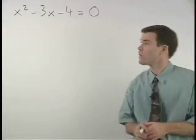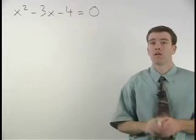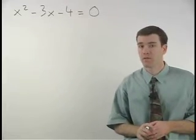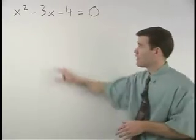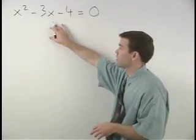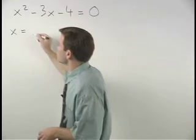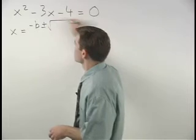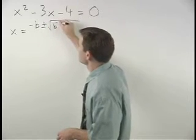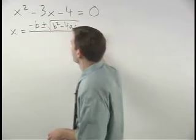To solve this equation using the quadratic formula, remember from the previous example, the quadratic formula states that the variable we're solving for, in this case x, is equal to negative b plus or minus the square root of b squared minus 4ac all over 2a.